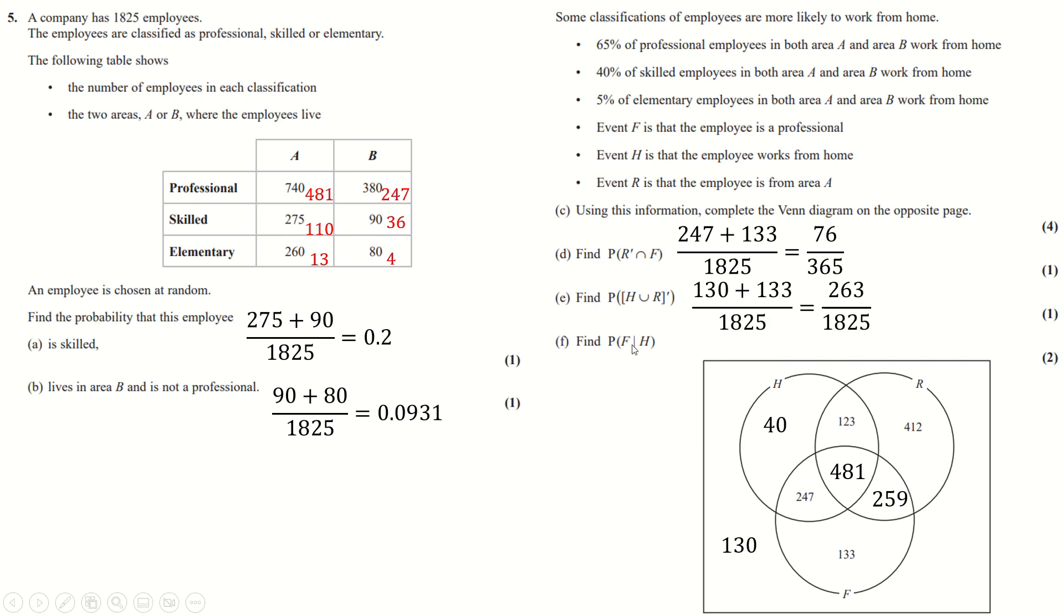And then we can use the conditional formula for this one so this is going to be the same as probability of F intersected with H which is these two, so those two over the total divided by just the probability of H which is everything in this circle divided by the total. That cancels with this and you just get this over this which would be that.